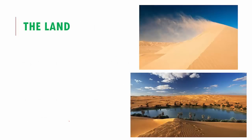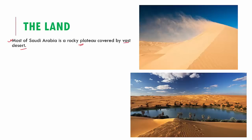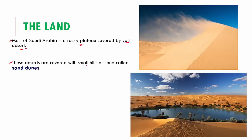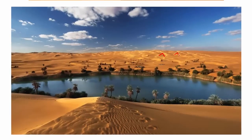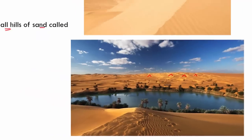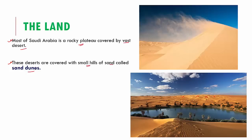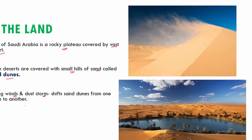Most of Saudi Arabia is a rocky plateau covered by vast desert. Far and wide, the only thing visible in the landscape is desert. In the desert there are small hills of sand called sand dunes. These sand dunes are not stationary — they keep moving around because of very strong winds and dust storms, which shift them from one place to another.